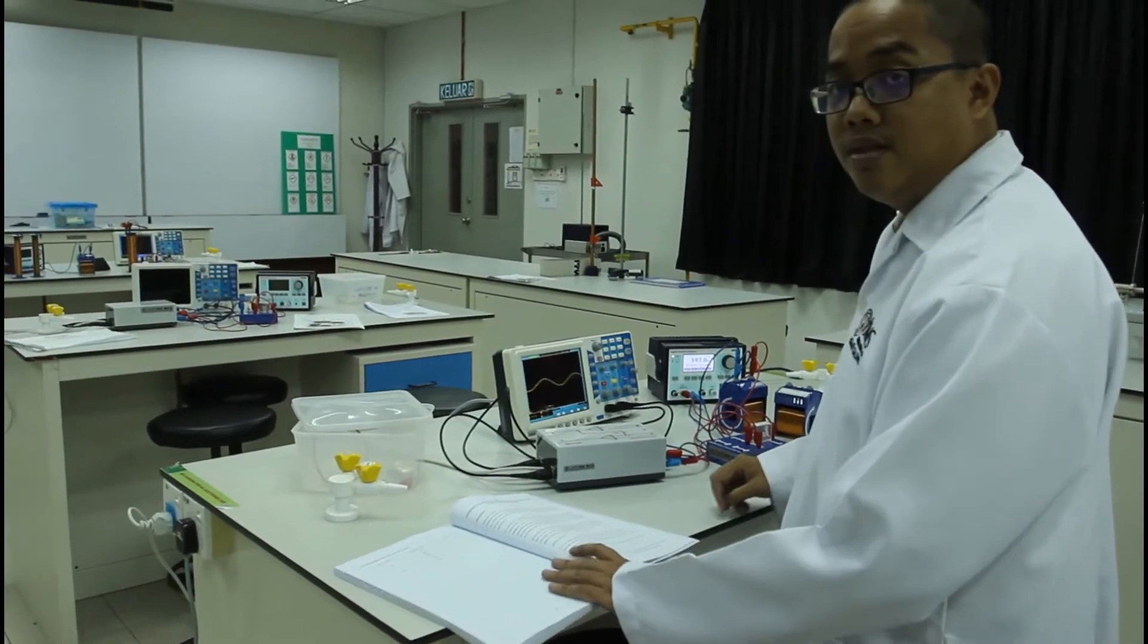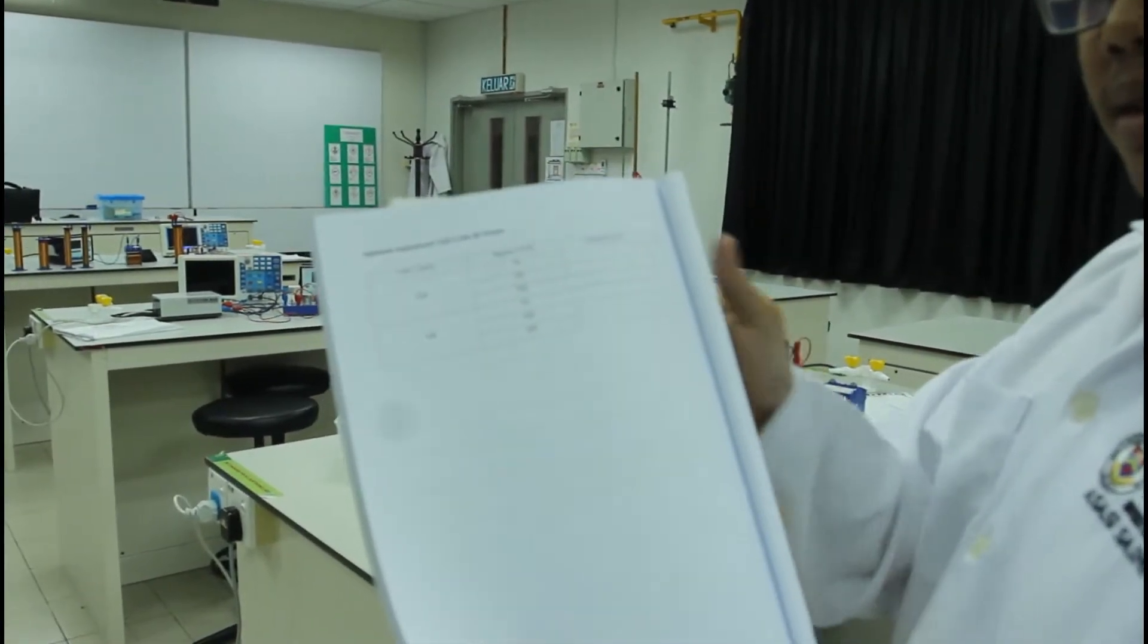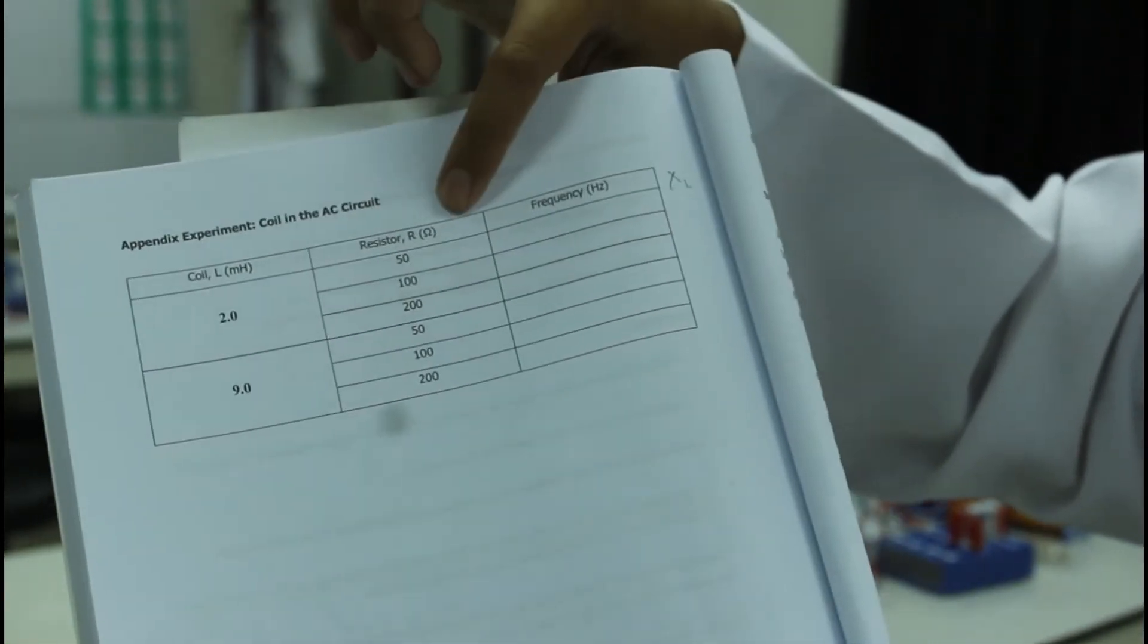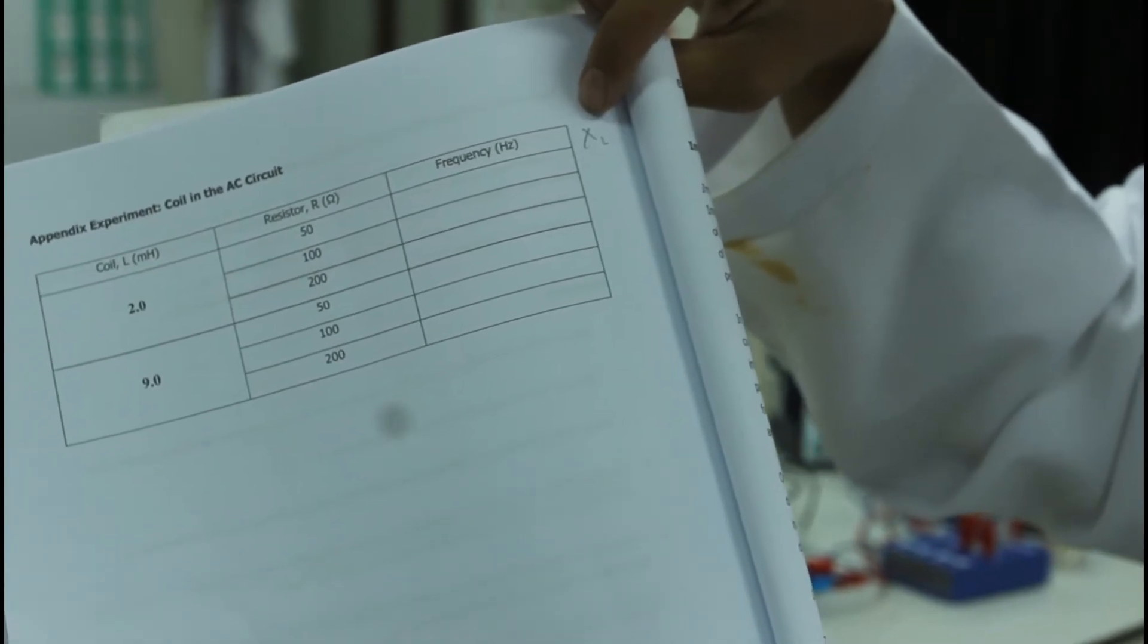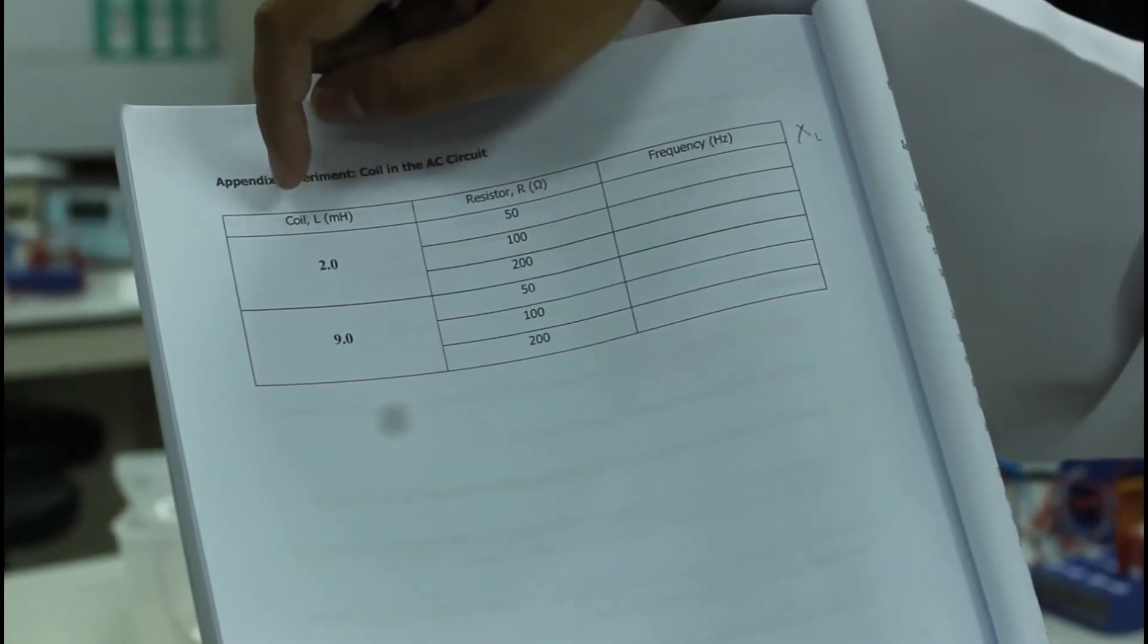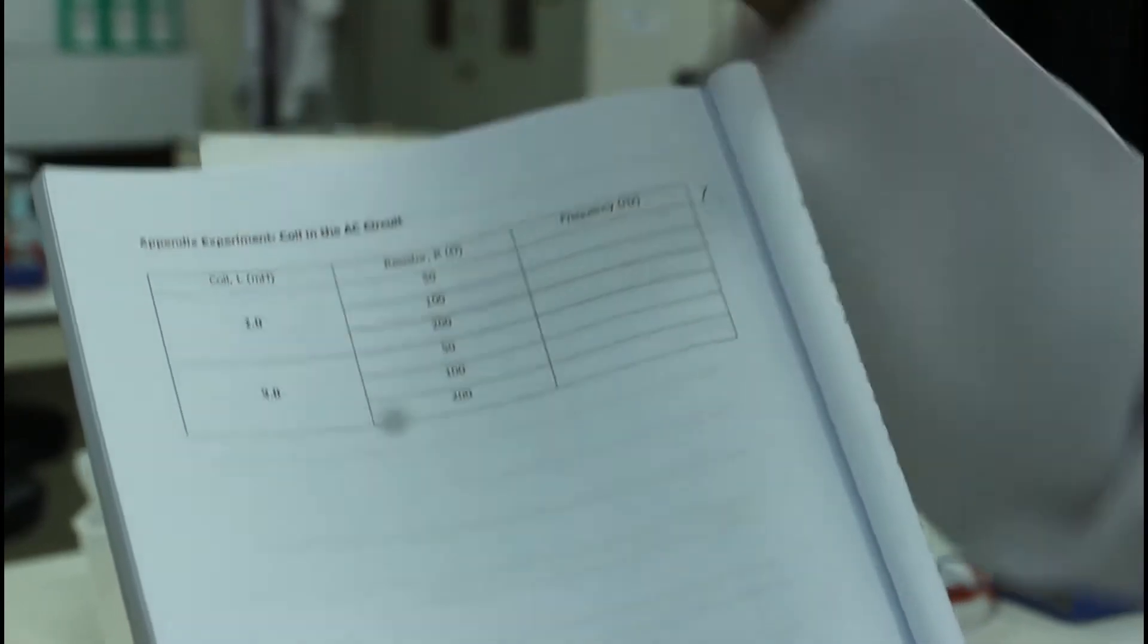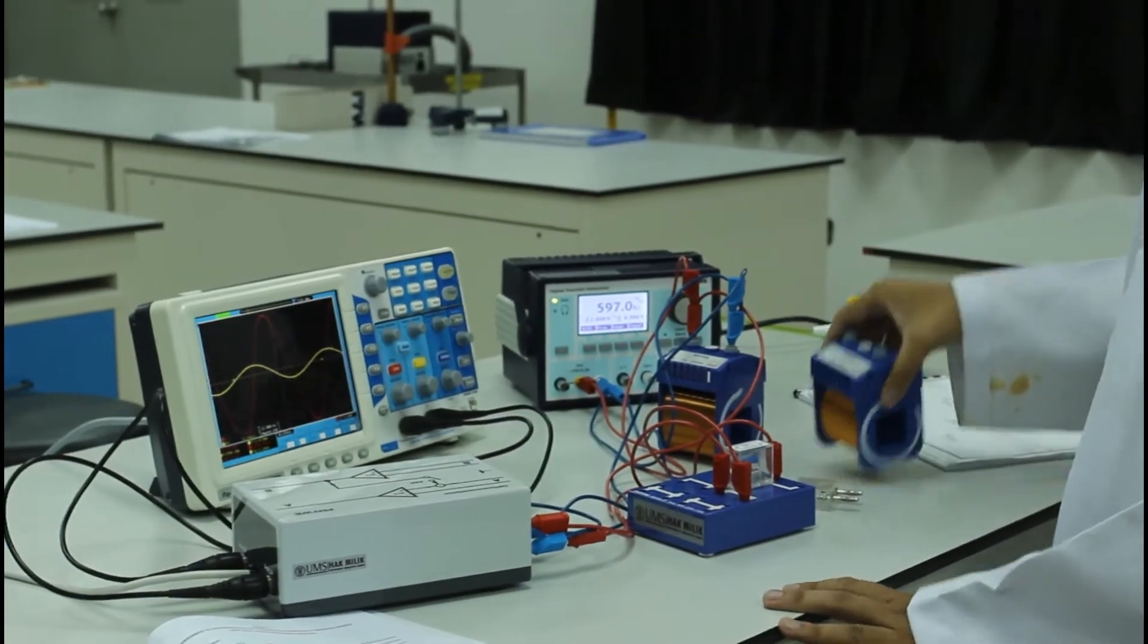Now let's move on to the first objective. In the first objective, here is the appendix used. In this appendix, there are four columns: inductance, resistance, frequency, and you are supposed to add the inductive impedance, or XL. So let's try for the first row, which is the coil with the inductance of 2.0 mH, and the resistor with resistance of 50 ohms. So now, here is 2.0 mH, as stated on this coil.